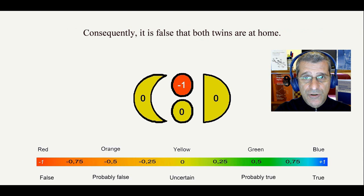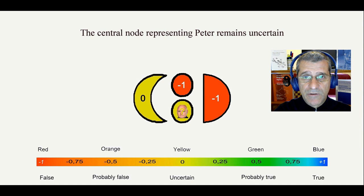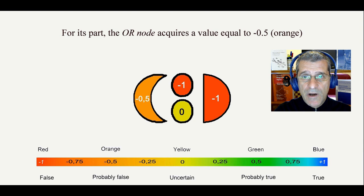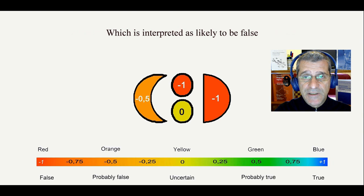The central node representing Peter remains uncertain. For its part, the OR node acquires a value equal to minus 0.5, orange, which is interpreted as likely to be false, and that results from averaging the false values of the central nodes.